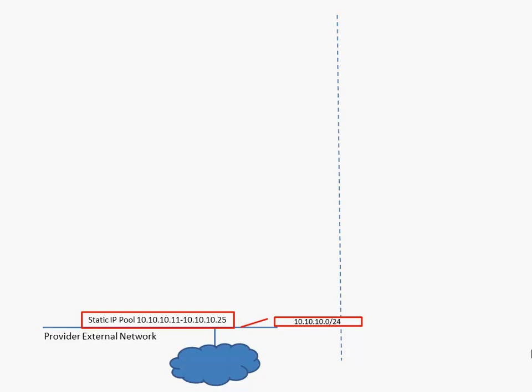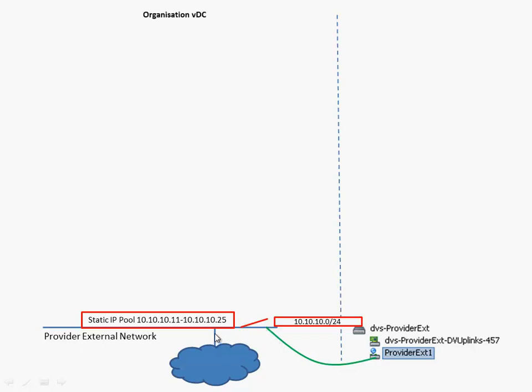Let's see what this means for our vSphere environment. When we are creating a provider external network it is always backed by a port group. This port group is created on a distributed virtual switch and will function as the gateway to our vCloud environment. The port group is created and connected to the external provider network.